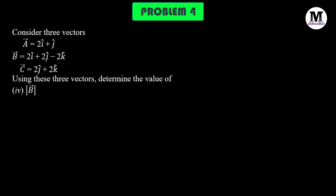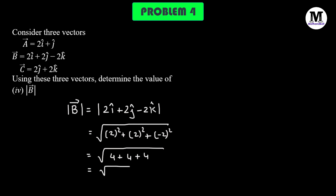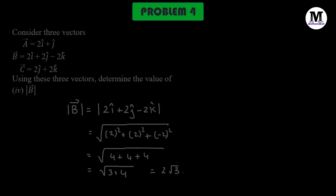Problem number 4: we need to find the magnitude of vector B. For this, we will take each individual component, square it, add them together, and take the square root. So that means we have square root of 2 squared plus 2 squared plus negative 2 squared. That gives us square root of 3 times 4, which is 2 times square root of 3.